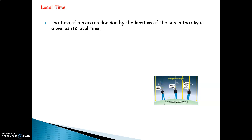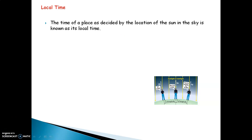Local time: the time of a place as decided by the location of the sun in the sky is known as its local time. The sun is right above our head at noon time — that is called the local time.